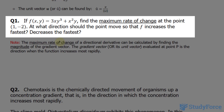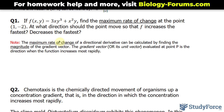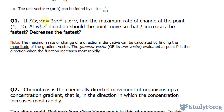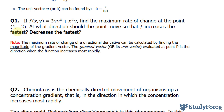At what direction should the point move so that the function increases the fastest or decreases the fastest? The maximum rate of change of a directional derivative can be calculated by finding the magnitude of the gradient vector. The gradient vector, or its unit vector, evaluated at the point p is the direction in which the function increases most rapidly.